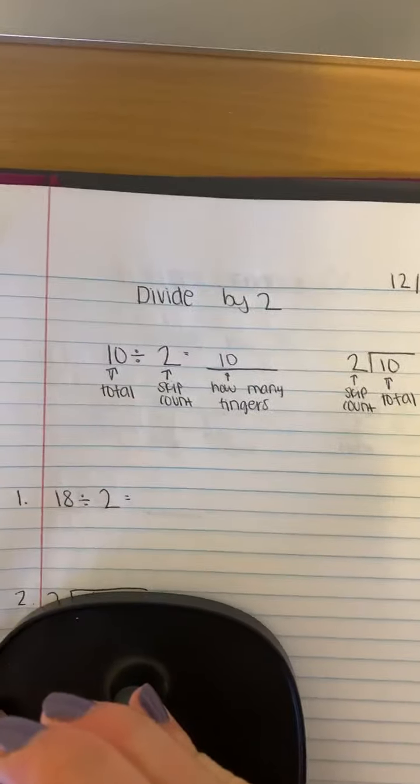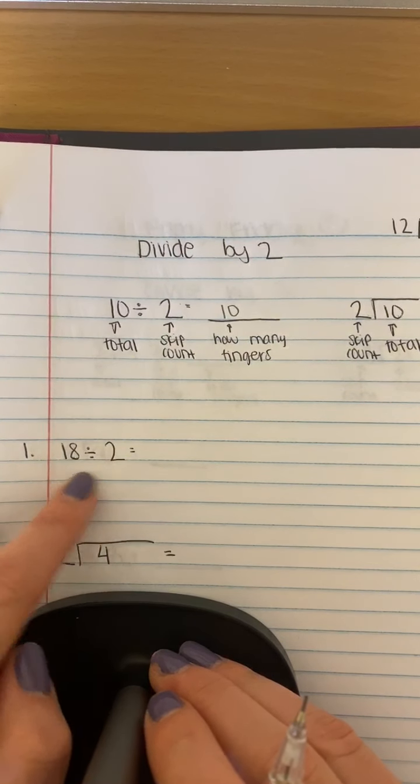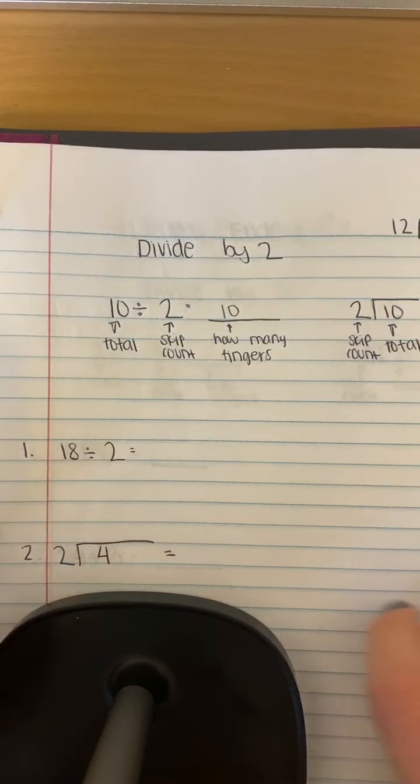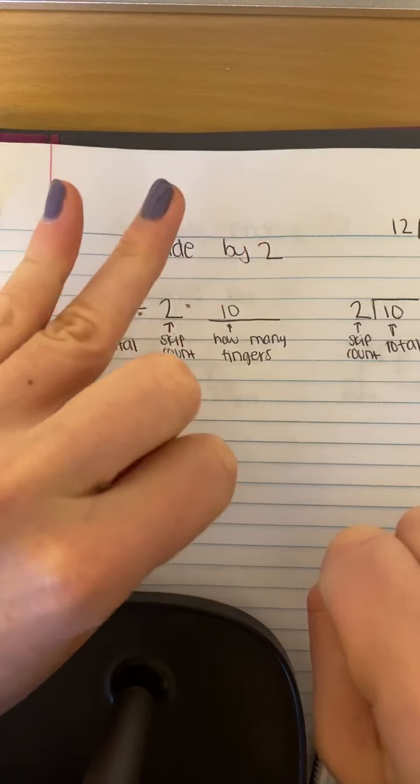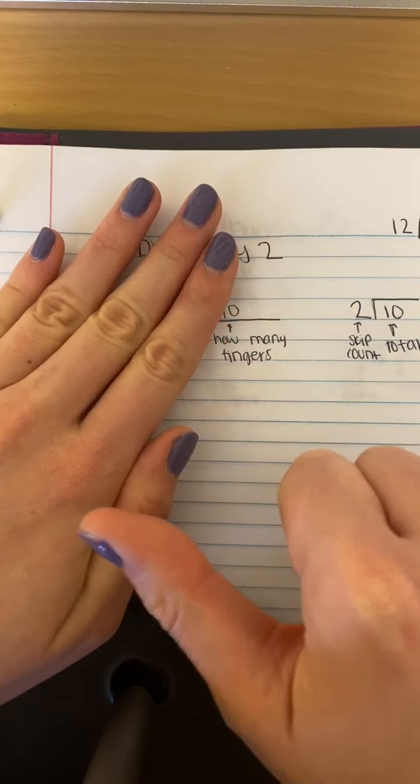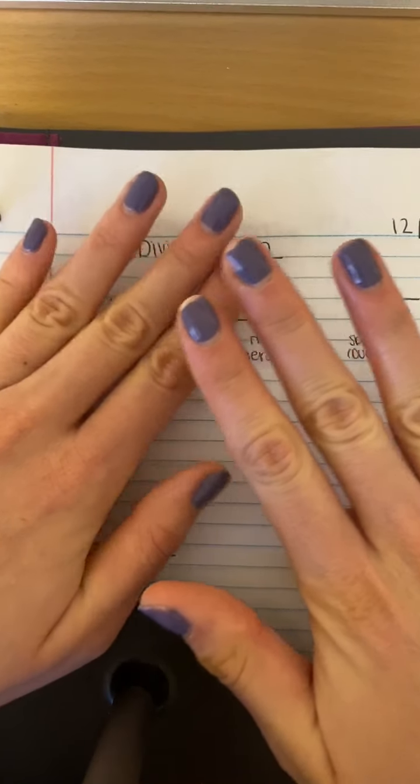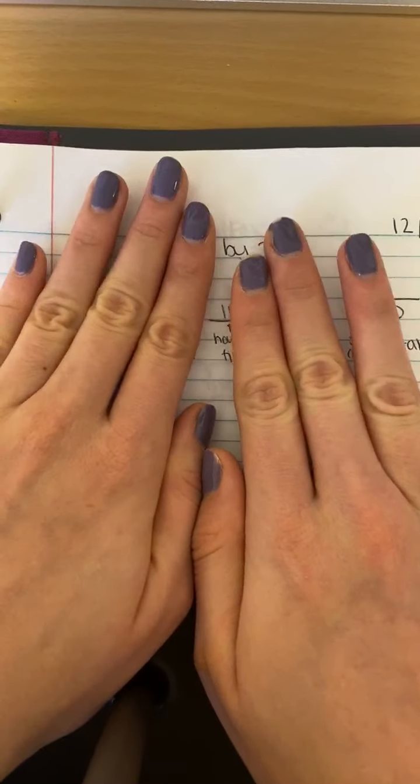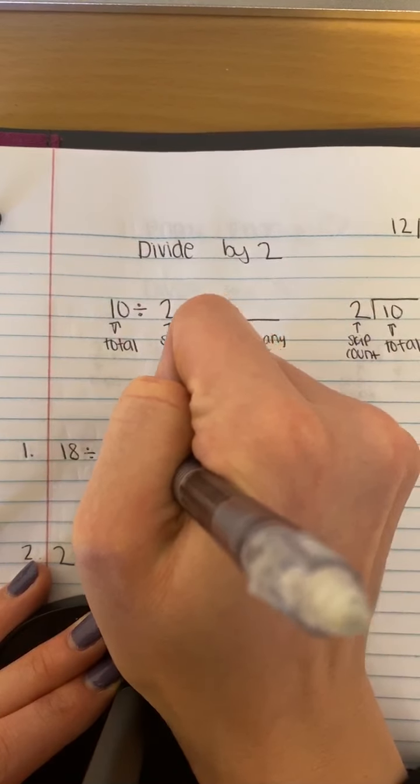All right, so now let's go through some of our examples. Here is my total divided by two. Eighteen divided by two. This is what I'm skip counting by, and this is my total, so I'm going to stop when I get to eighteen. Two, four, six, eight, ten, twelve, fourteen, sixteen, eighteen. And I stop. How many fingers is that? That is nine fingers. So eighteen divided by two would give me nine.